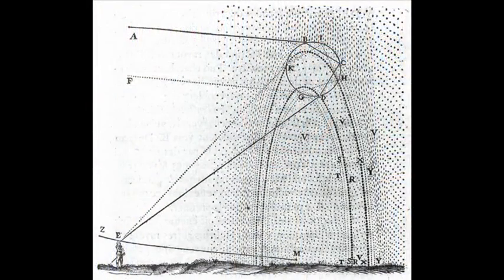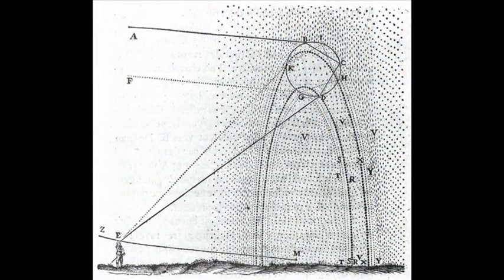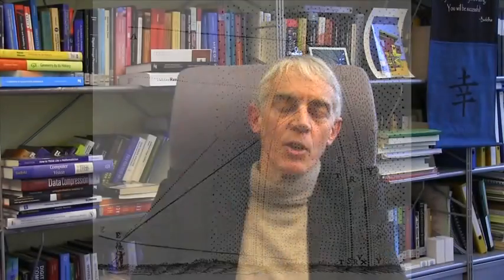This experiment was only an early step. It took another 300 years until Descartes and Newton gave a full explanation of how white light can actually be decomposed into the colors of the rainbow.